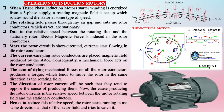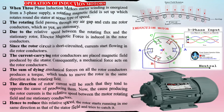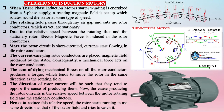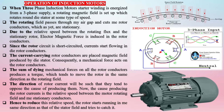The current-carrying rotor conductors are placed in the magnetic field produced by the stator. Consequently, a mechanical force acts on the rotor conductors. The sum of these mechanical forces on all the rotor conductors produces a torque which tends to move the rotor in the same direction as the rotating field. The rotor current direction is such that it tends to oppose the cause producing it — the relative speed between the rotating field and the stationary conductors — so the rotor starts running in the same direction as the stator field and tries to catch it.